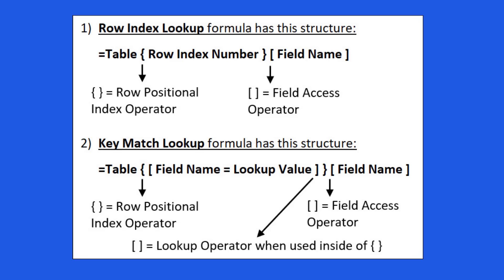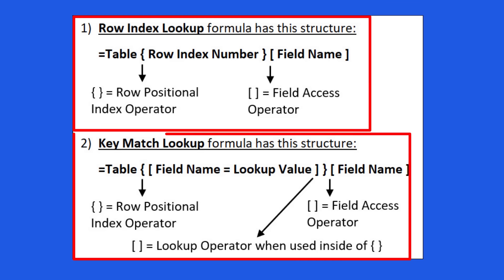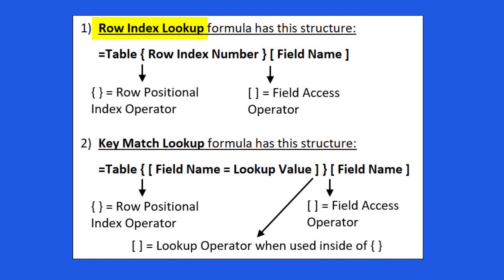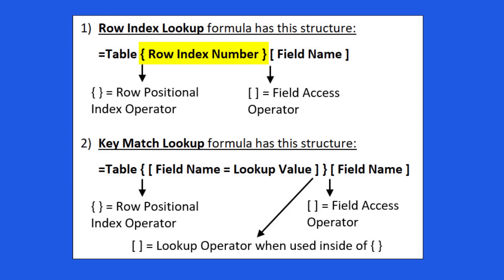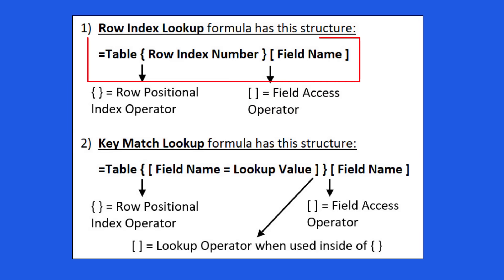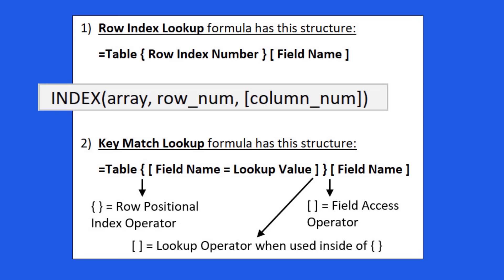Straight from page 13 in the PDF notes: for row index lookup, start with the table identifier, then in curly brackets (row positional index operator) put the row index number. Power Query is base 0, so row 1 is 0, row 2 is 1, row 3 is 2, and so on. Hard-code the number in curly brackets to get the row or record, then use square brackets (field access operators) with the field name to determine the column. Together — table, row position, field position — you get a two-way lookup, similar to INDEX.